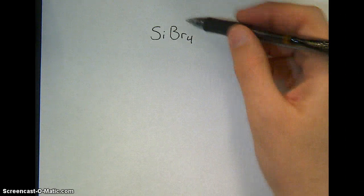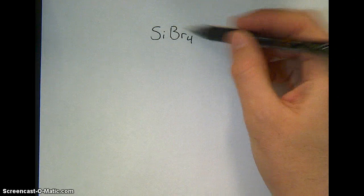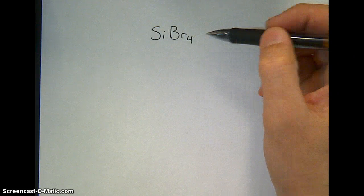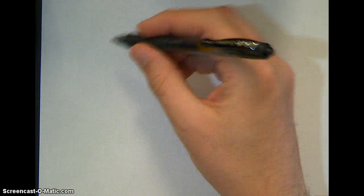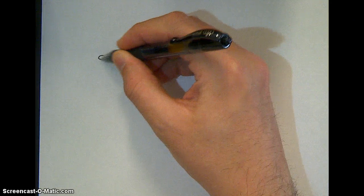All right, so now we're going to draw the structure for this silicon and bromine compound. Just like before, step one is to draw out each individual atom involved and its Lewis dot structure.